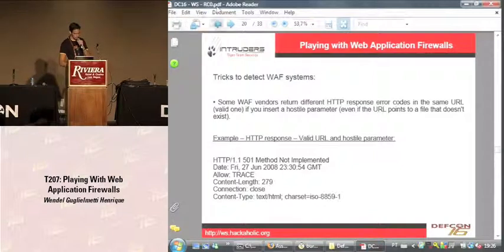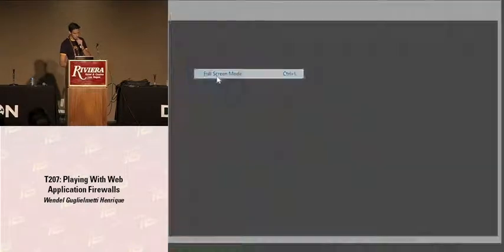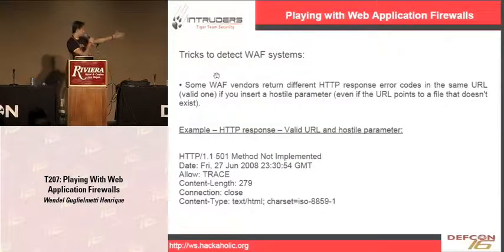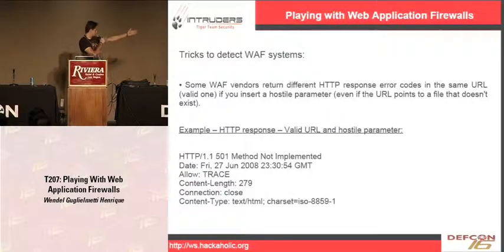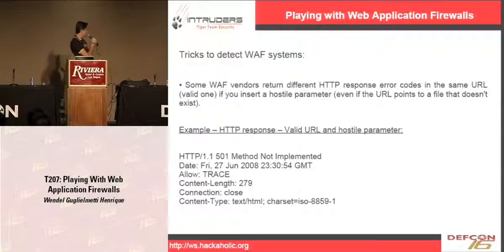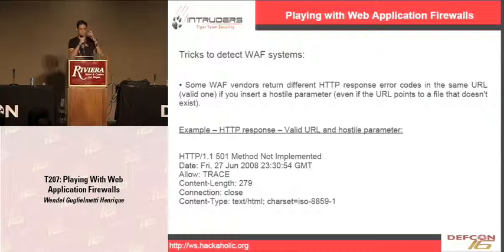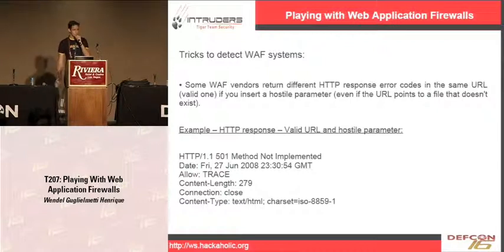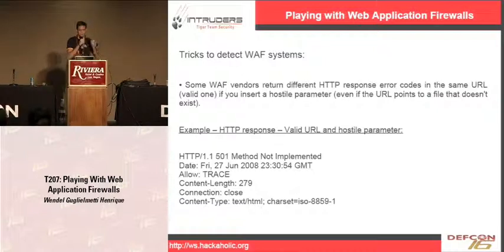This kind of return can help us to identify web application firewalls. Here is a real example from one of the application firewalls we tested: a valid request with a non-existent parameter returned a 501 status code - method not implemented. We could also note that the Allow header was changed, since the Allow option in the normal request never returned the TRACE option. So there are many small points that can be used to detect this kind of system.